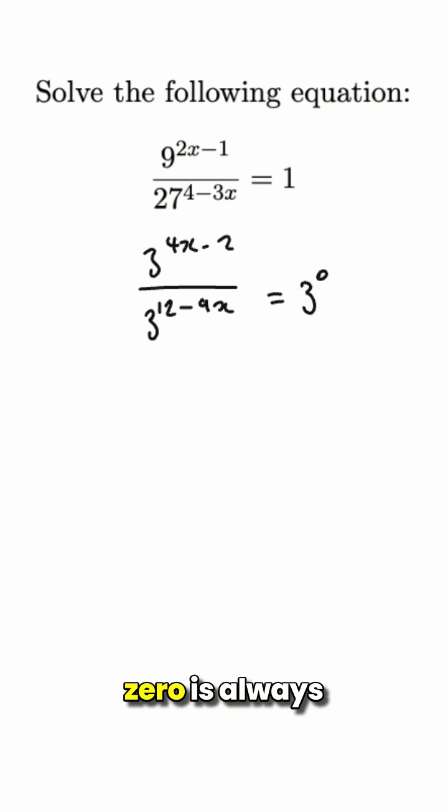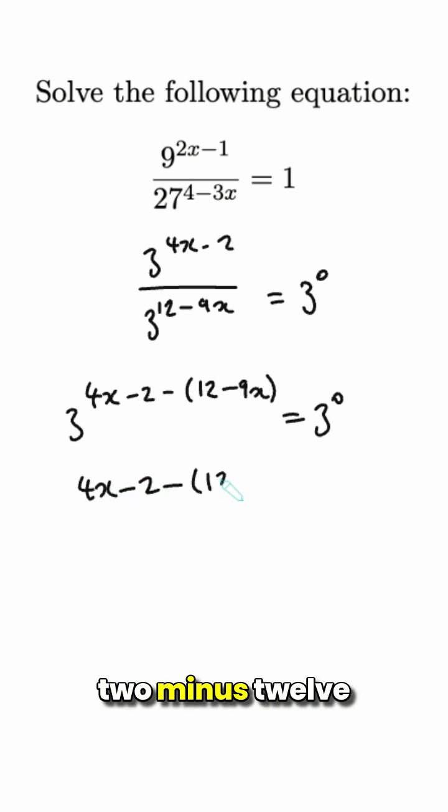Now using the division rule for indices here, I've got 3 to the 4x minus 2 minus 12 minus 9x is equal to 3 to the 0. This means that we must have 4x minus 2 minus 12 minus 9x equals 0.